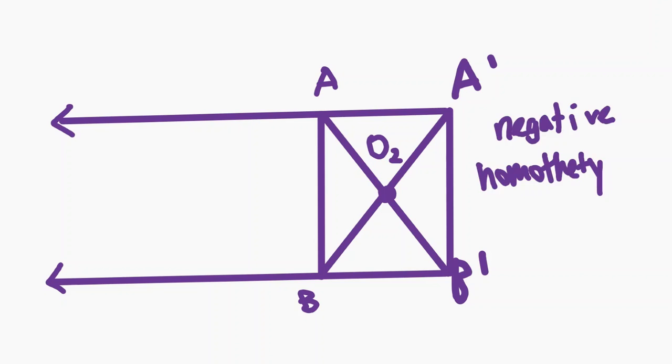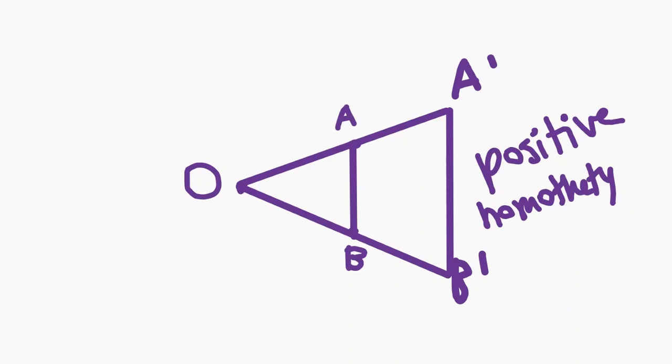This is an example of a negative homothety, where A O sub 2 and B prime O sub 2 are on opposite sides of O sub 2, and thus their ratio is negative. As you may have guessed, the homothety with center O is a positive homothety.